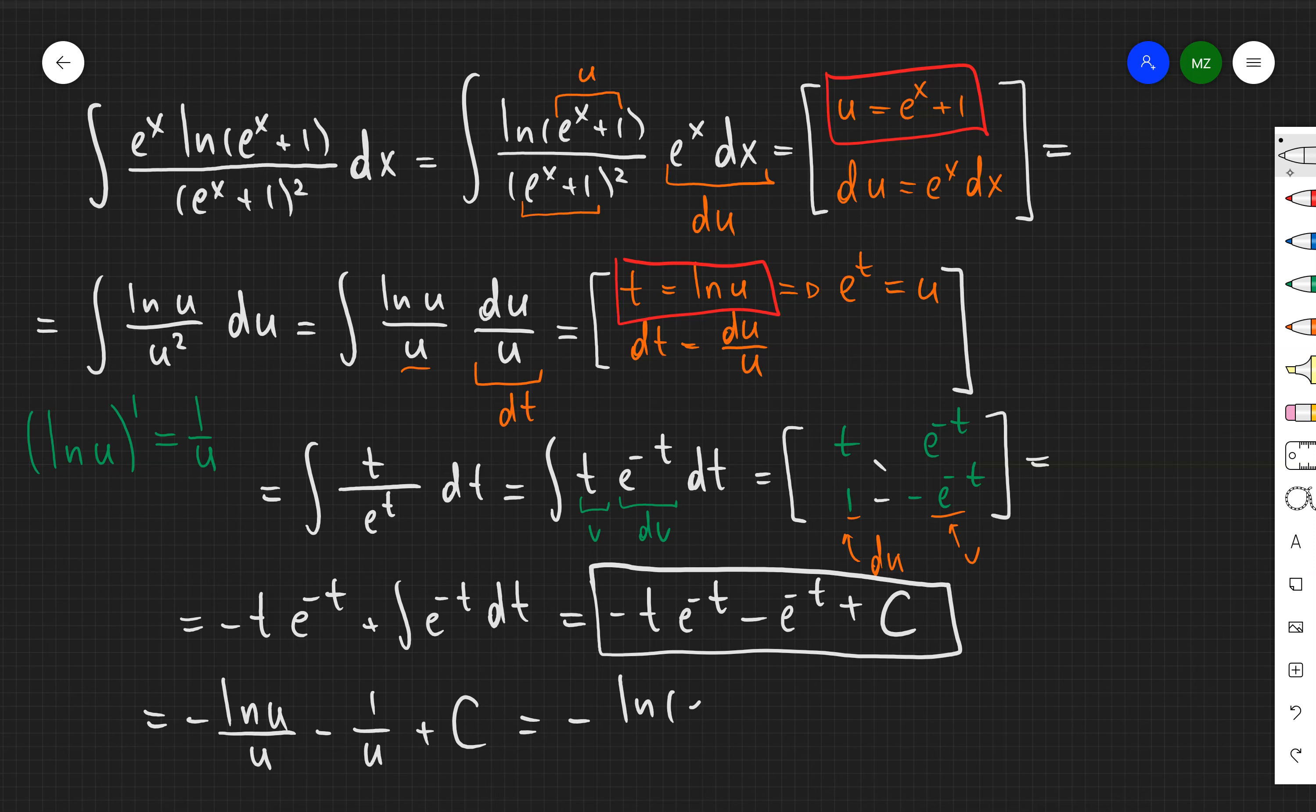And then I'm going to replace u with e to the x plus 1. So I'm going to get finally as a final answer minus a fraction ln e to the x plus 1 plus 1 over e to the x plus 1 plus c. And that is going to be my final answer.